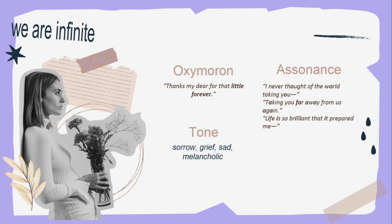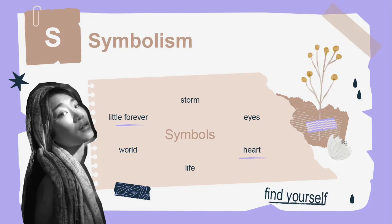And then assonance, which is the repetition of vowel sounds. We have the repetition of the O sound in: 'I never thought of the world taking you,' 'Taking you far away from us again,' and 'Life is so brilliant that it prepared me.' The tone again is sorrow, grief, sad, and melancholic. For symbolism, we have: storm, eyes, heart, life, world, and little forever. Storm represents a big problem or obstacle. Eyes represent life. Heart represents emotions or feelings. Life represents experiences. Little forever symbolizes happy memories that weigh so much despite being brief.